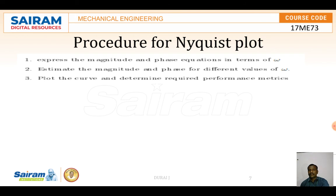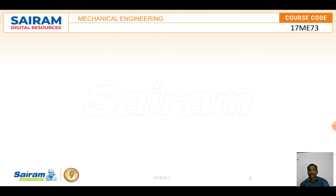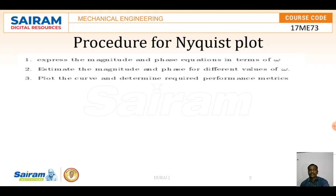Then comes the procedure for Nyquist plot. Express the magnitude and phase equation in terms of ω. Estimate the magnitude and phase for different values of ω. Plot the curve and determine the required performance matrices. With that it could be over.